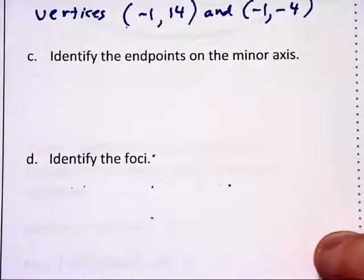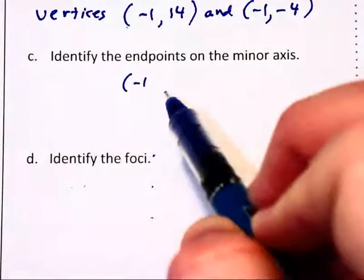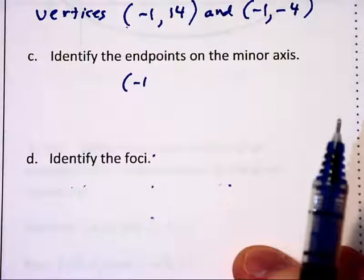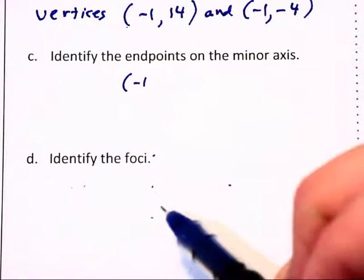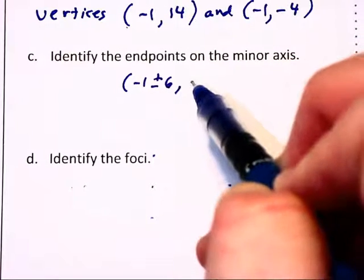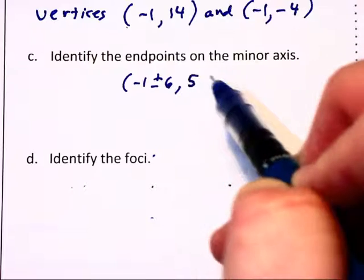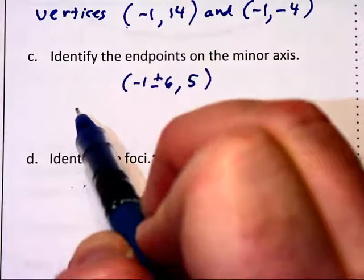The endpoints of the minor axis. Again we are going to be starting at (-1, 5). The minor axis is going to be in the x direction. Since the square root of 36 is 6, we are going to be adding and subtracting 6 from that coordinate of the center. The endpoints will be at (5, 5).